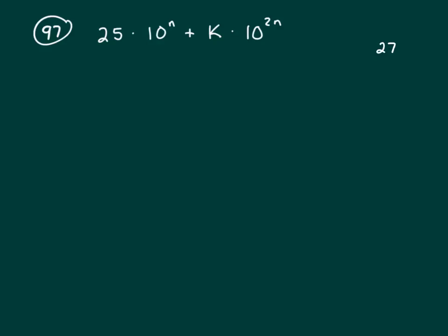For example, if you've got 27, 2 plus 7 is 9. 9 goes into 9 one time.